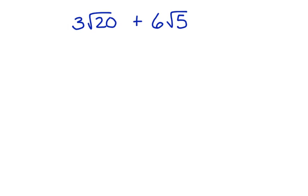What happens if we don't have like terms? How do we add and subtract radical expressions when the terms aren't alike? Consider 3 square roots of 20 plus 6 square roots of 5. These terms are not alike, so we have to find a way to make them alike. We're going to break down the square root of 20 into two smaller square roots, hoping we can find something common with the square root of 5 to create like terms.